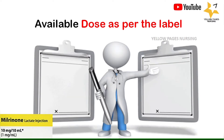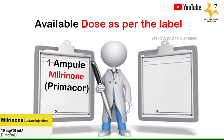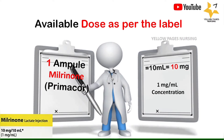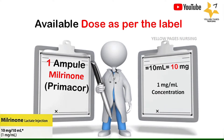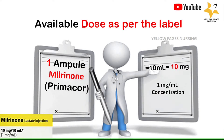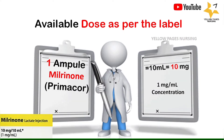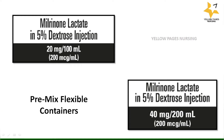Injection milrinone is available in ampoule form with one ampoule containing 10 ml, that is 10 mg. It comes under the brand name Primacor. Here, one ml contains one milligram concentration. It is also available in pre-mixed flexible containers: milrinone lactate in 5% dextrose injection — 20 mg in 100 ml containing 200 microgram per ml, and 40 mg per 200 ml containing 200 microgram per ml.